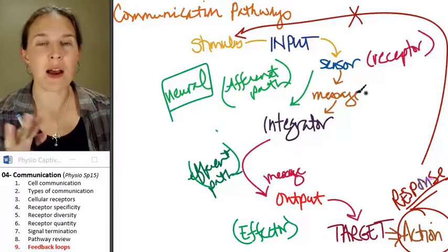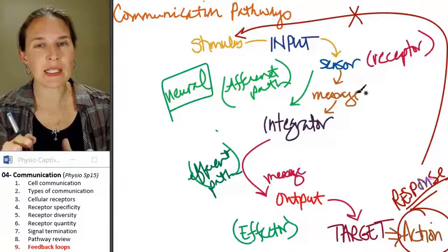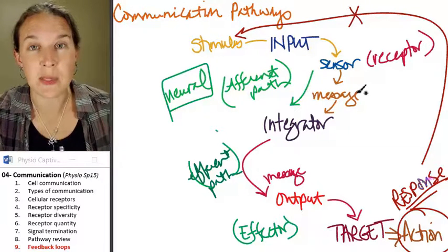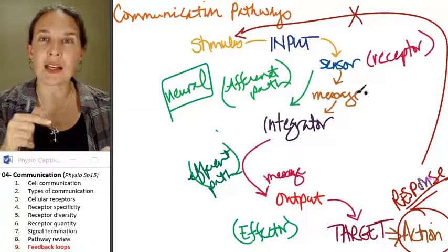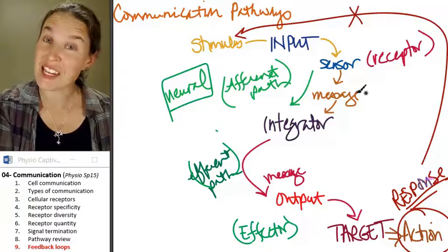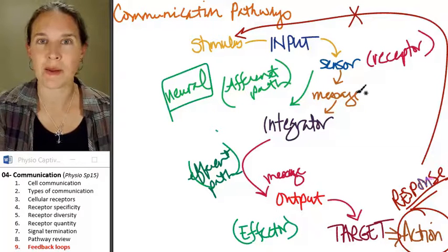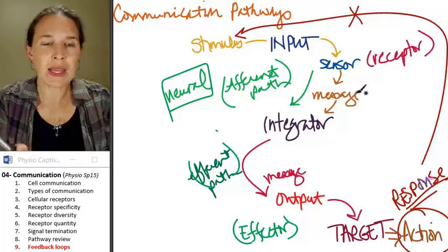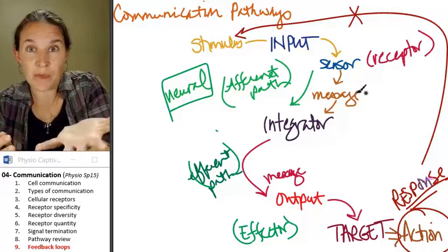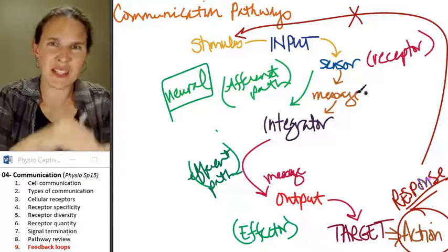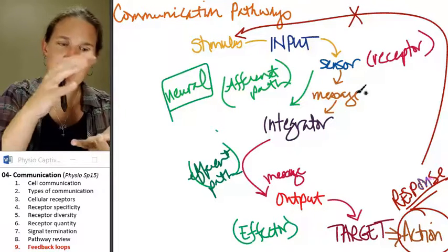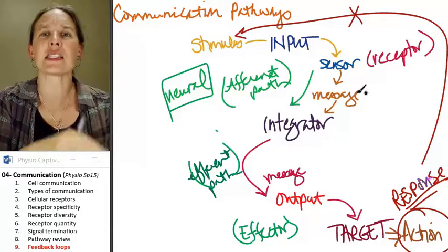Sometimes, if the response removes the stimulus in a negative feedback loop, it is possible, if it is a homeostatic pathway, that we can maintain homeostasis that way. If you go out of the range, you can negatively feed that back and get back to the set point.